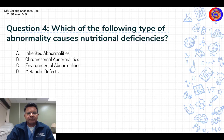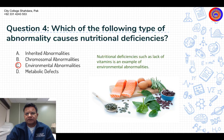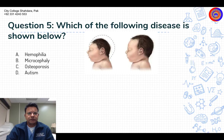Question number four: Which of the following types of abnormalities causes nutritional deficiencies? Options are: inherited abnormalities, chromosomal abnormalities, environmental abnormalities, and metabolic defects. The answer is environmental abnormalities. Nutritional deficiency, such as lack of vitamins, is an example of environmental abnormalities. You have to remember each of the following diseases: hemophilia, microcephaly, osteoporosis, and autism.